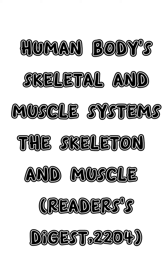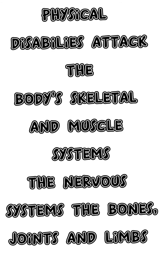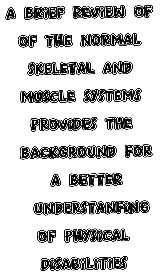Physical disabilities attack the body's skeletal and muscle system, the nervous system, the bones, joints, and limbs. A brief review of the normal skeletal and muscle system provides the background for a better understanding of physical disabilities.